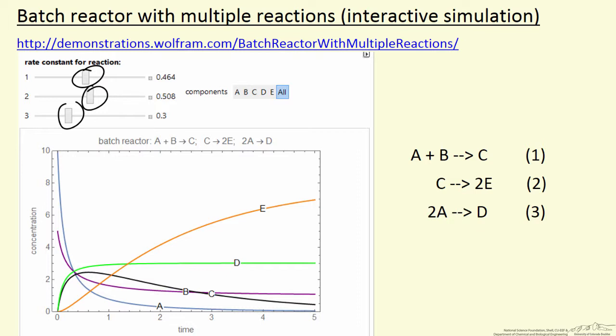The other thing we can do is we can select to just plot the concentration of A by clicking the button for A, or just the concentration of B. And here I've selected concentrations of all of the species in the reaction. Let's switch over now to the interactive simulation.